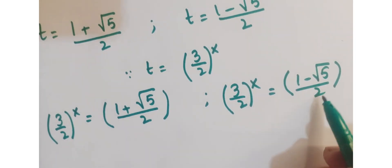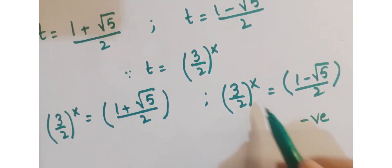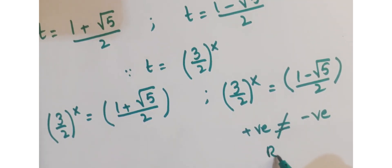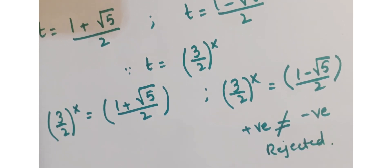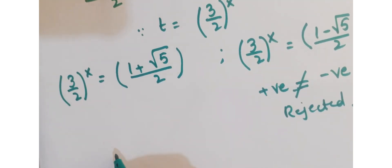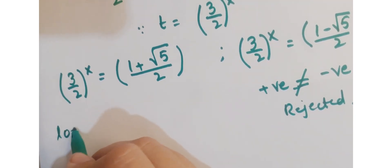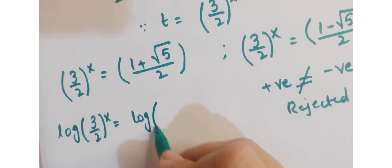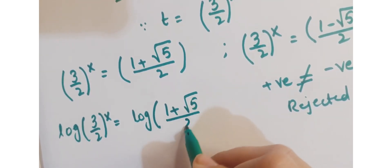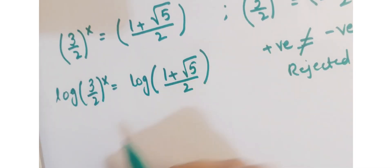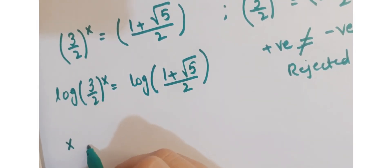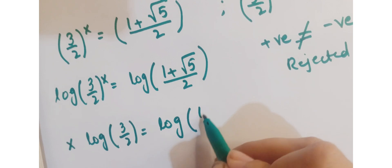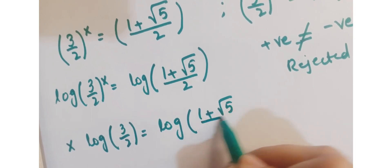Since when we evaluate this value, 1 minus under root 5 upon 2 is a negative value and 3 upon 2 to the power x is a positive value, these two cannot be equivalent. So we are going to reject that solution and work on the positive one. Here, in order to find x, just take log on both sides: x times log of 3 upon 2 equals log of 1 plus under root 5 upon 2.